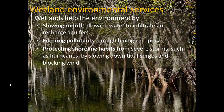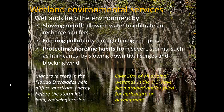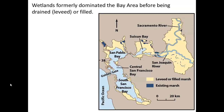One of the worst hurricane disasters in this country was Hurricane Katrina in the New Orleans area, and many people feel we would have been much better off if we had not drained so many of those wetlands — we would have still had those trees to break up the energy of the storm. Mangrove trees in the Florida Everglades help diffuse hurricane energy before the storm hits land, thereby reducing erosion. Over 50% of all original wetlands in the U.S. have been drained or filled for agriculture or development.